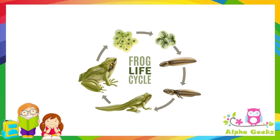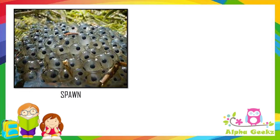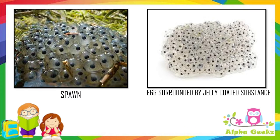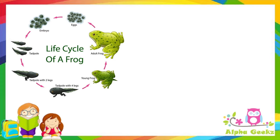Life cycle of a frog: frogs lay eggs in large clusters called spawns in water. Each egg is surrounded by a jelly-like substance to protect it from predators. The eggs turn into embryos, and after a few days the baby frogs hatch out of the eggs and are called tadpoles. The tadpole looks like a little fish and lives only in water, breathing through gills.